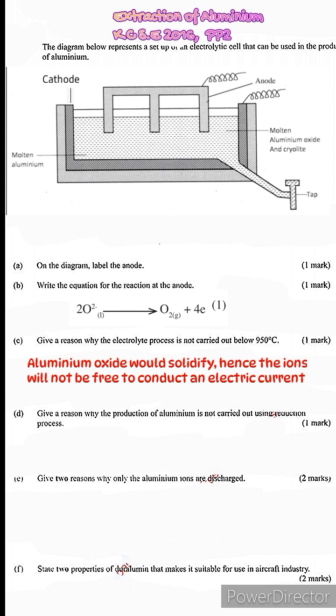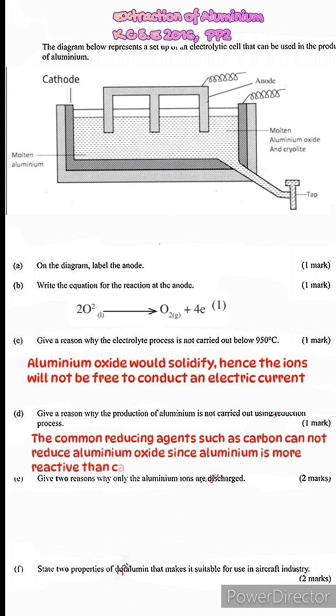D. Give a reason why the production of aluminum is not carried out using the reduction process. Now this is because aluminum is a reactive metal. It's more reactive than common reducing agents that are usually used like carbon. And therefore they cannot reduce the aluminum oxide.